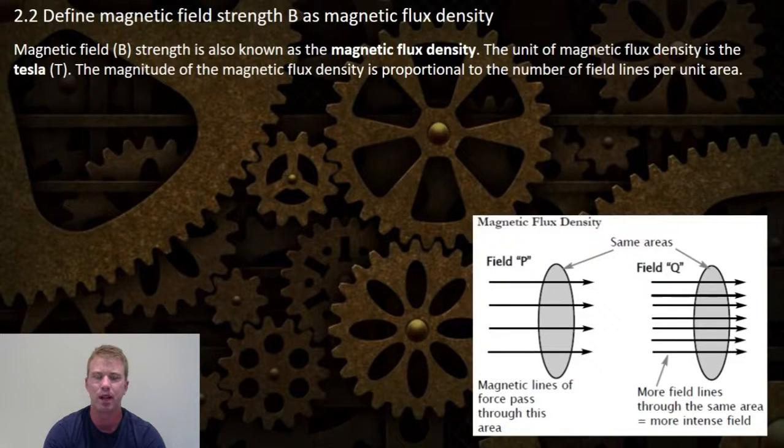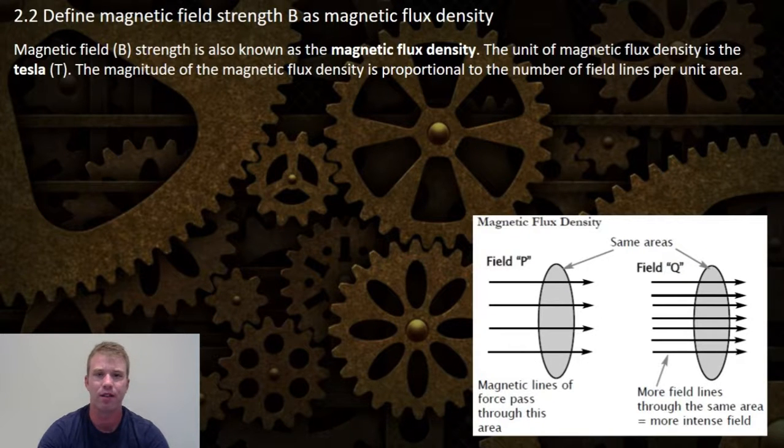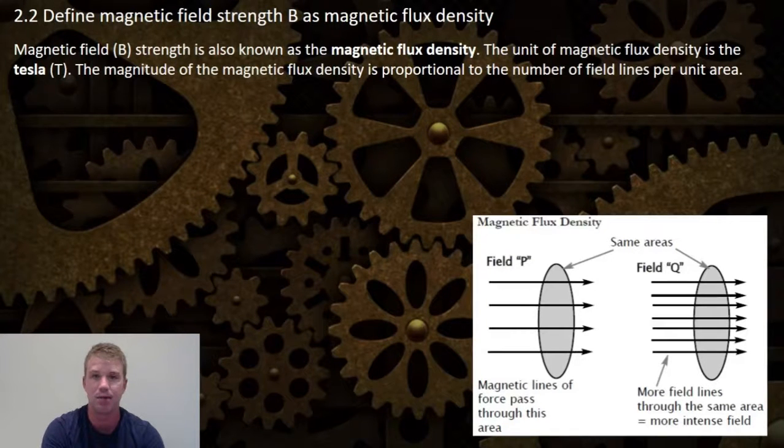Magnetic field strength B is also known as magnetic flux density. The unit of magnetic flux density is the tesla, named after Nikola Tesla.